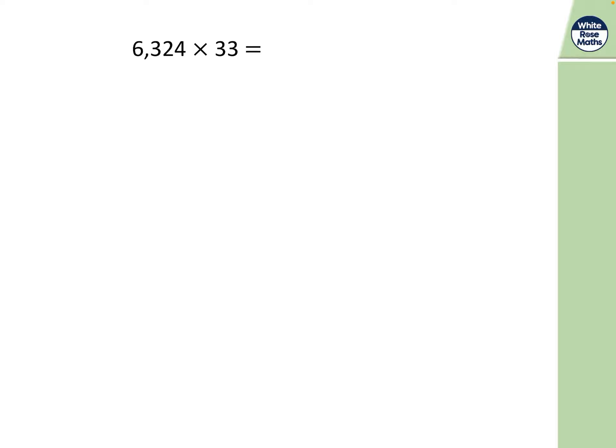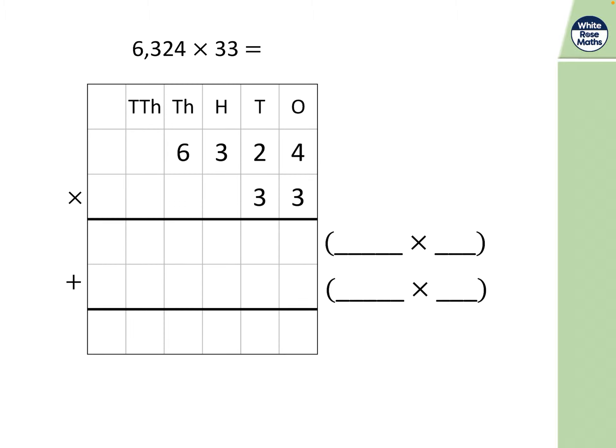Okay so this calculation 6,324 times 33, I am going to suggest you draw out the area model and then try and work it out using a formal column method. I'm going to show you the formal column method here. Give this a go. You might have done your area model or area method, grid method, whatever you want to call it. Now try and relate to this. Pause the video, work it out. Start over here.